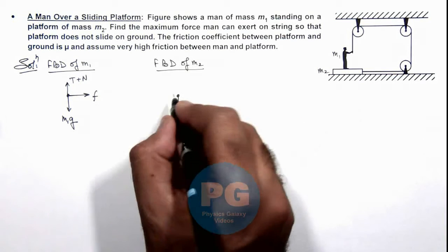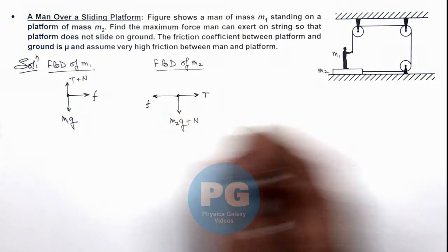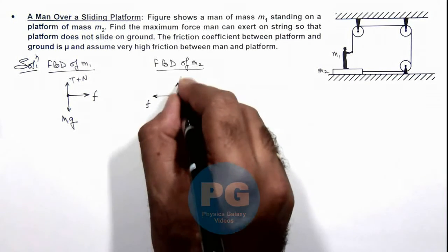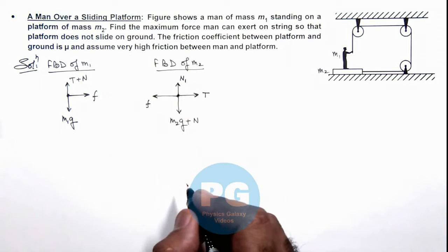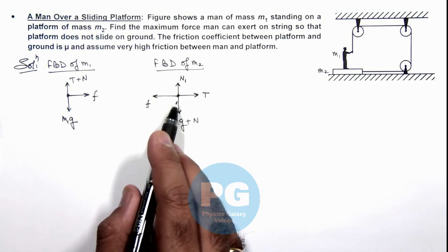The platform will experience a tension T toward the right and friction toward the left. Another normal reaction which is applied by the ground on the platform will be N1 in the upward direction. Since both are at rest, we can analyze the friction forces.